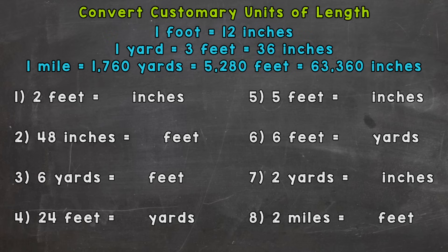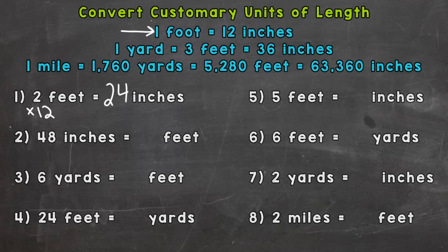Let's jump into number one: two feet equals how many inches? We know that one foot equals 12 inches — think of a ruler, a ruler is 12 inches. So if we have two of those, we need to do two feet times 12, which gives us 24 inches. When we go from a larger unit to a smaller unit, we multiply.